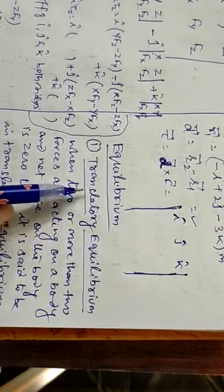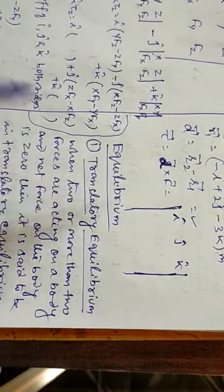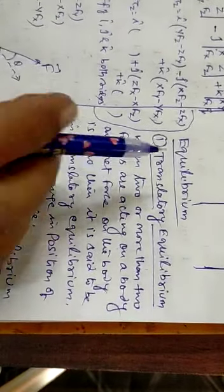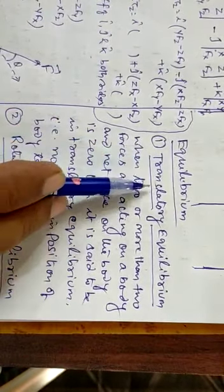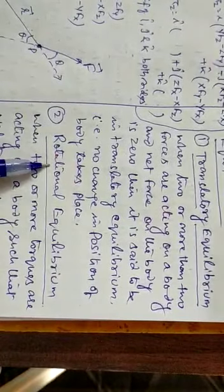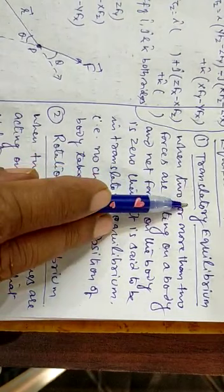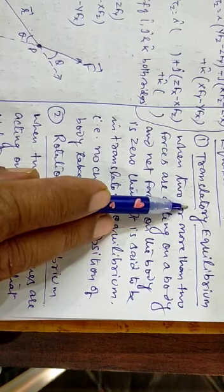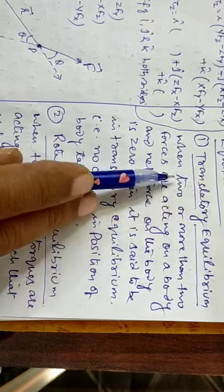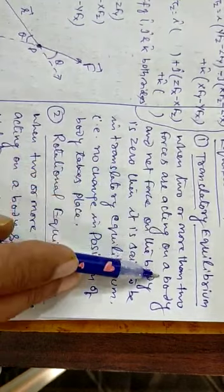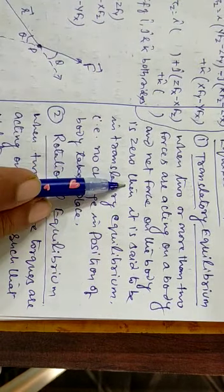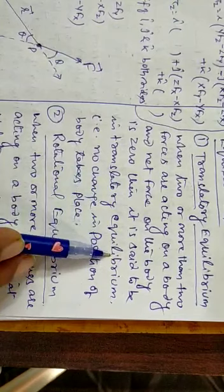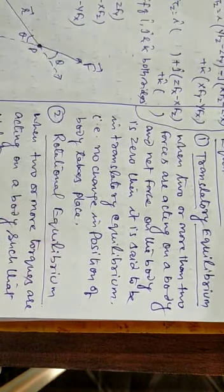According to equilibrium, although we have studied earlier, the equilibrium is of two types: one is translatory and one is rotational equilibrium. The translatory equilibrium means that the body is not moving, so it doesn't change its position. When two or more forces are acting on a body and the net force on the body is zero, then it is said to be in translatory equilibrium, and there is no change in the position of the body.